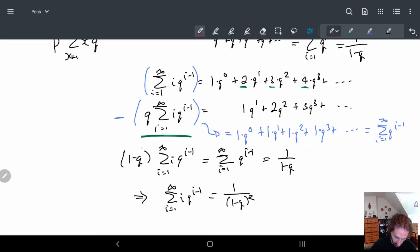What did I do here? I took this 1 minus Q and I multiplied to the other side, so I just divided both sides by 1 minus Q. That's it.